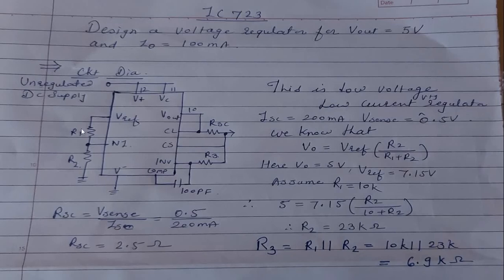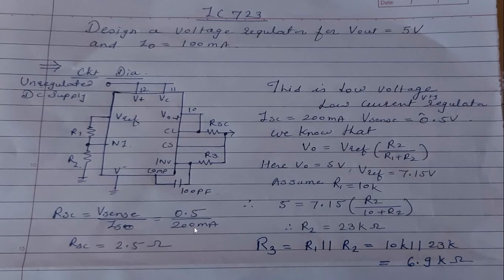So R2 = 23 kΩ and R1 = 10 kΩ. R3 is equal to R1 parallel R2, which is 10k parallel 23k, giving R3 = 6.9 kΩ. For RSC, using the formula RSC = Vsense / ISC: with Vsense = 0.5 V and ISC = 200 mA, we get RSC = 2.5 Ω. This completes the low voltage, low current regulator design.